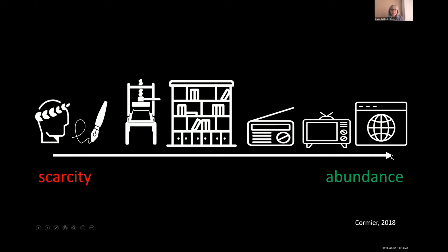Mass production of books made dissemination much easier, and then through radio, television, and the internet the whole scenario flipped. We now have an abundance of information — an input flood, an avalanche — yet we still learn and teach with a narrow scarcity mindset. This is another way to understand the mismatch: our brains want to conserve energy and we've been formed over years to learn with a scarcity mindset.